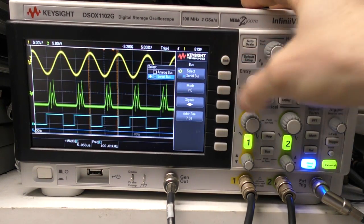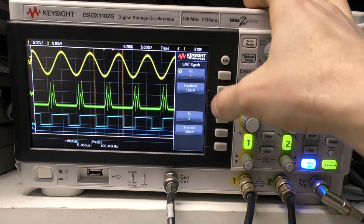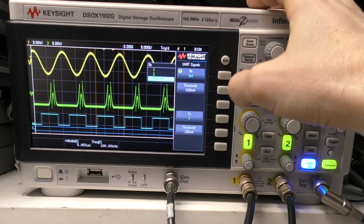So, for example, if I select serial decode, this probably isn't going to make much sense, but I can say signals receive external, so I can now decode on that.